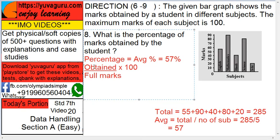Because the formula for percentage is total marks obtained upon full marks into 100. Total marks obtained is 285. Full marks is how much? Out of 5 subjects, 100 each, so 500.